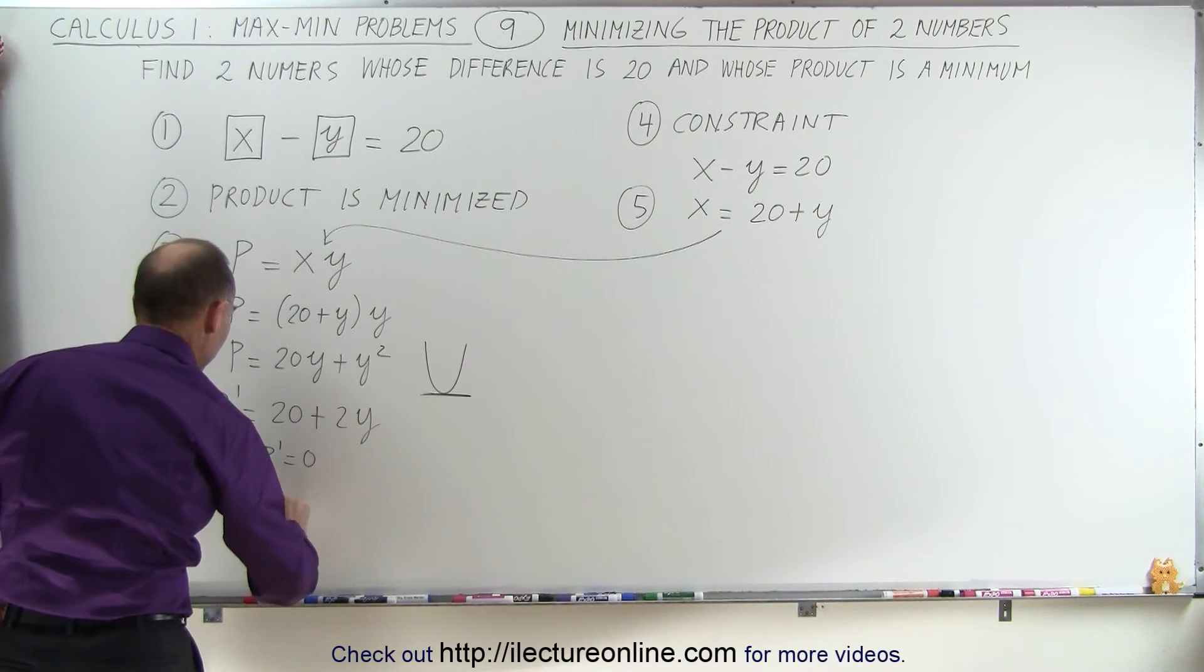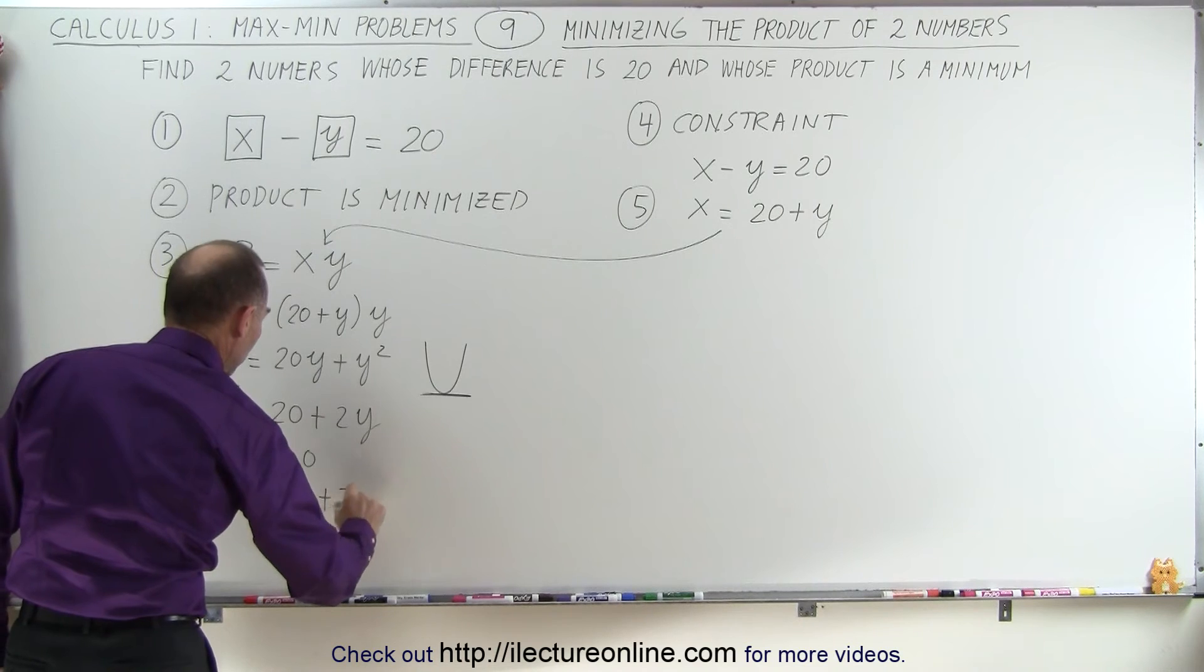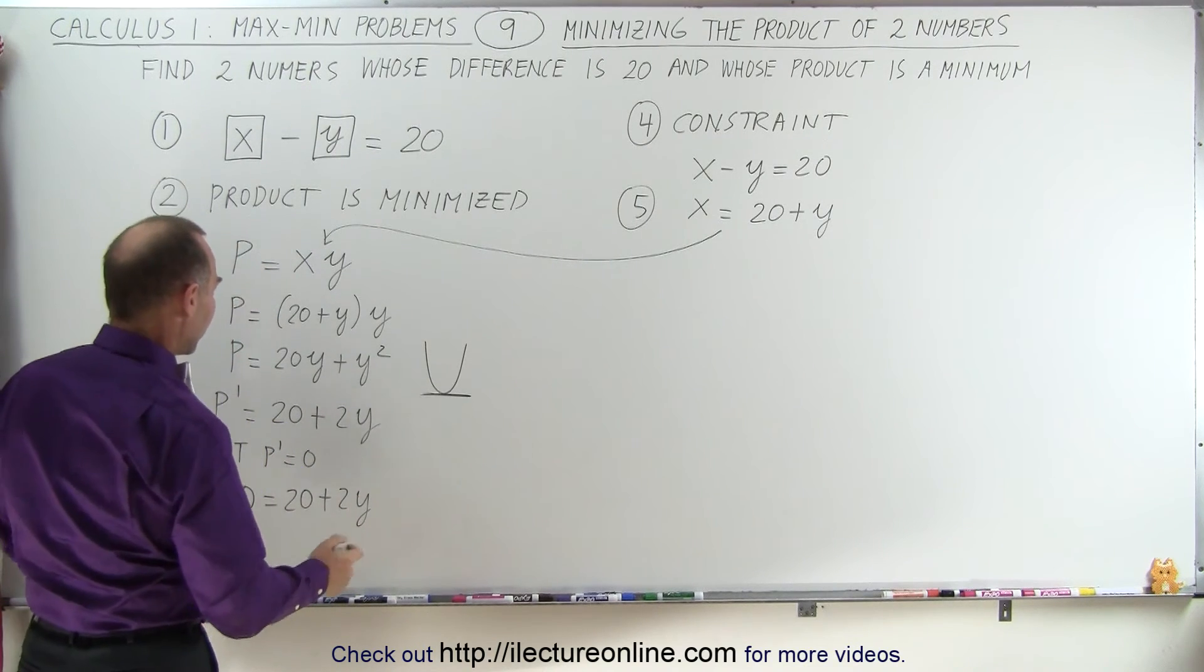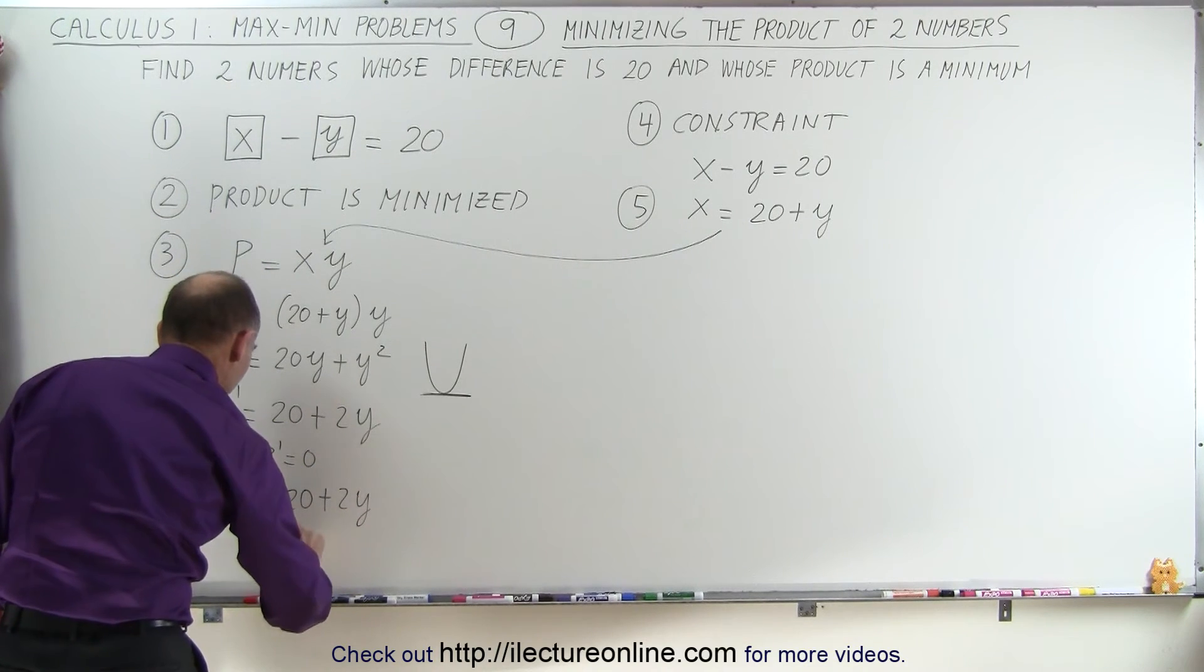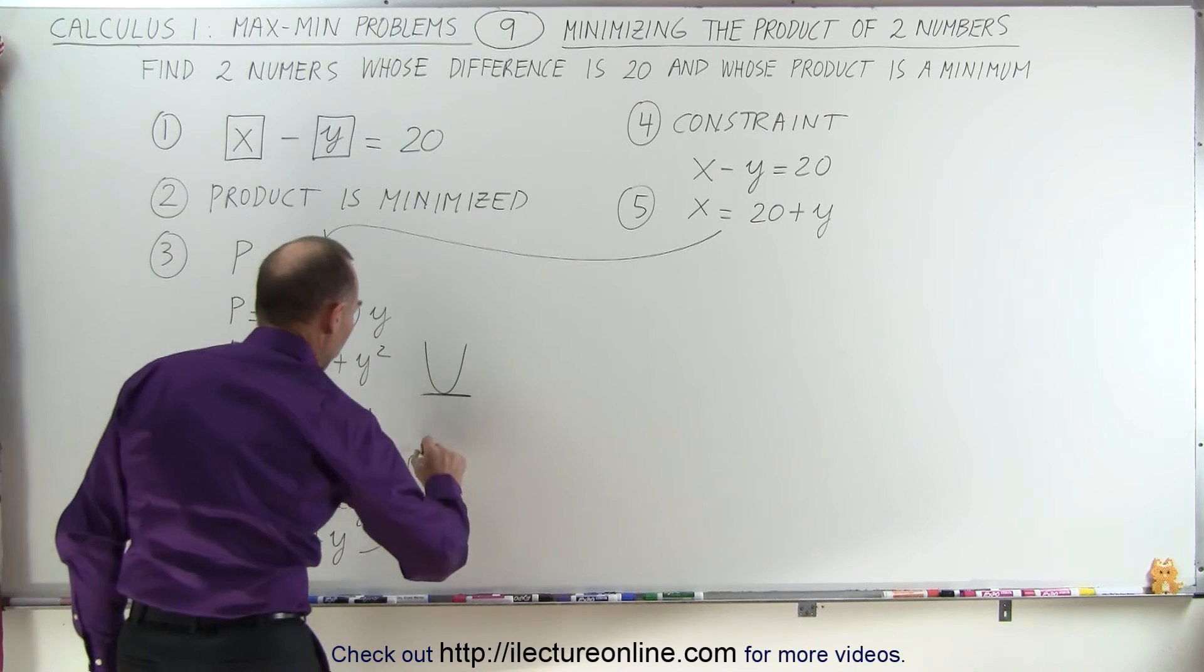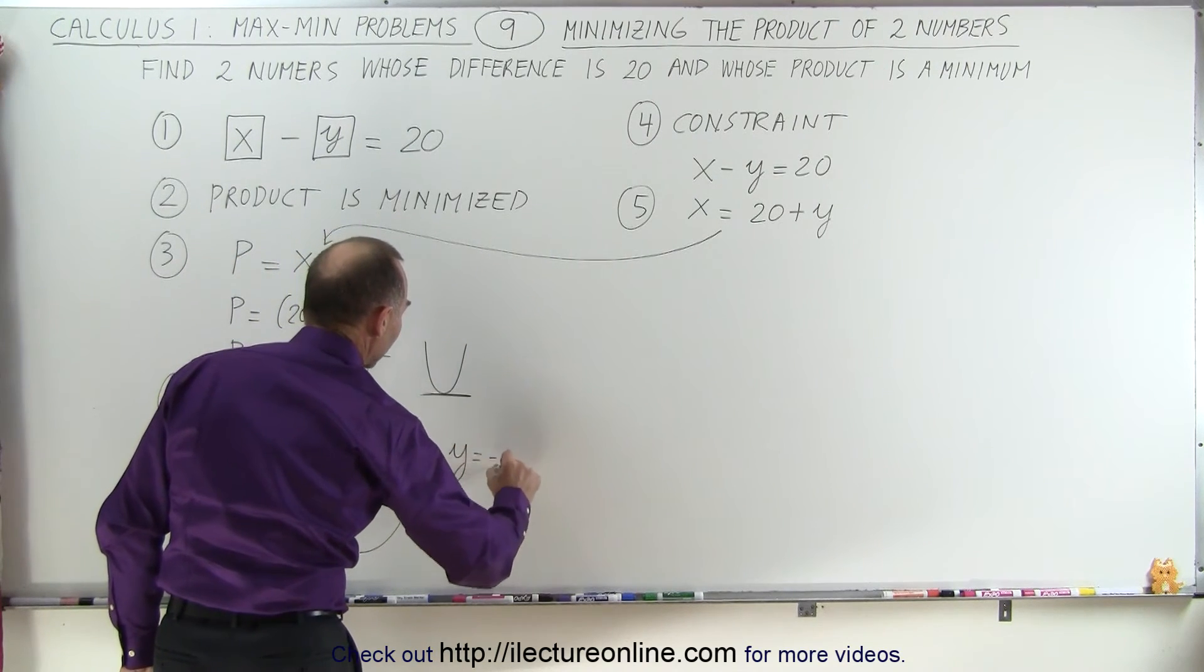We find that point by setting the derivative equal to zero and solving for the variable. So we can then say that zero is equal to 20 plus 2Y. Divide both sides by 2, we get zero is equal to 10 plus Y, or Y is equal to minus 10.